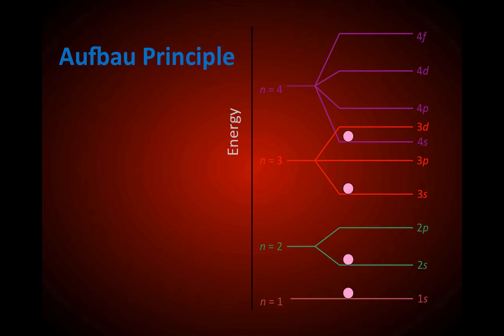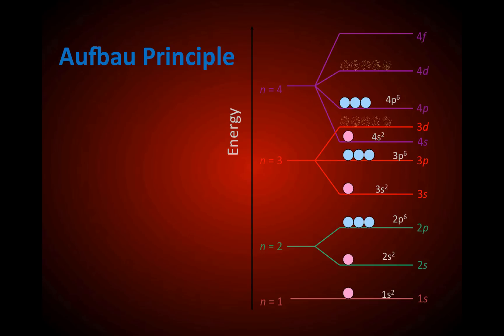Any S sublevel has one orbital — 1S, 2S, 3S, and 4S. A P sublevel has three orbitals: 2P, 3P, 4P — three orbitals each holding two electrons, for a total of six electrons in any P sublevel. A D sublevel has five orbitals, each holding two electrons, for a total of ten electrons. An F sublevel has seven orbitals for a total of 14 electrons.